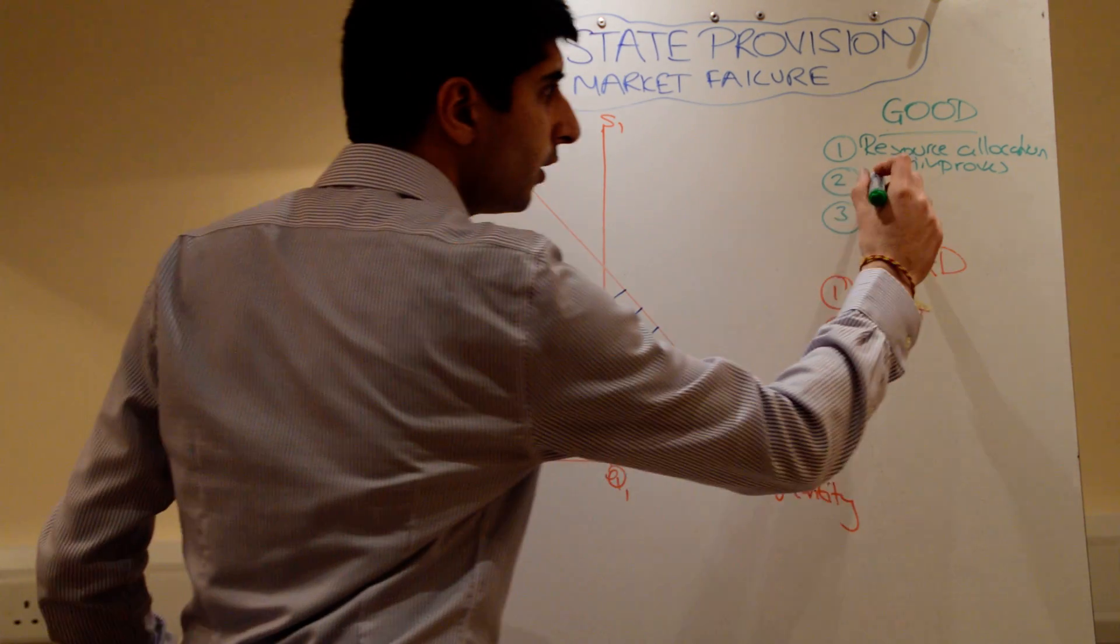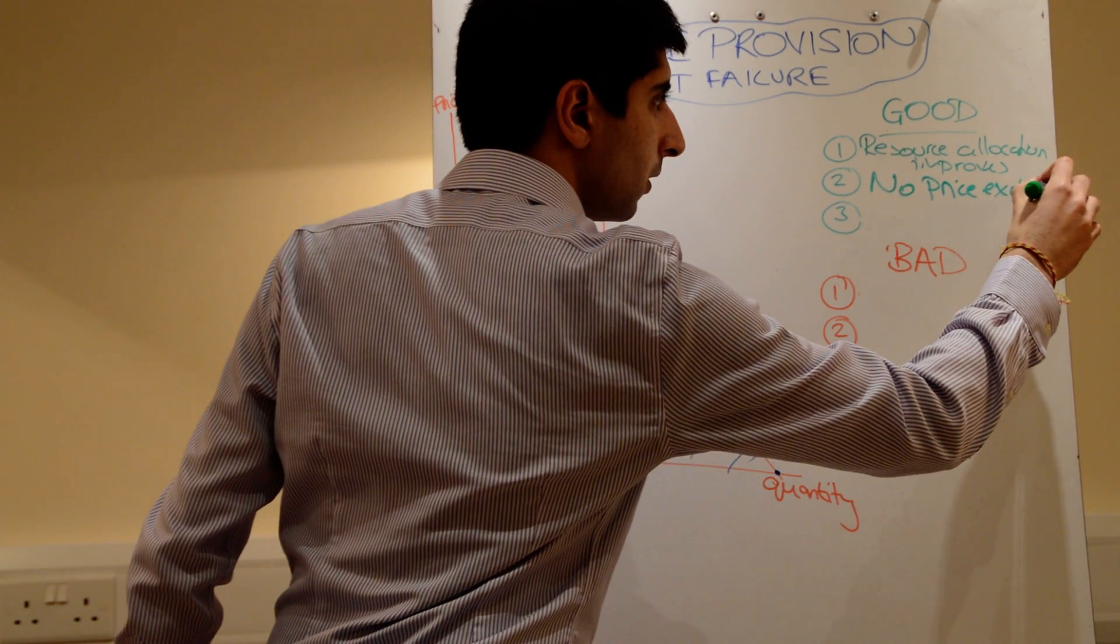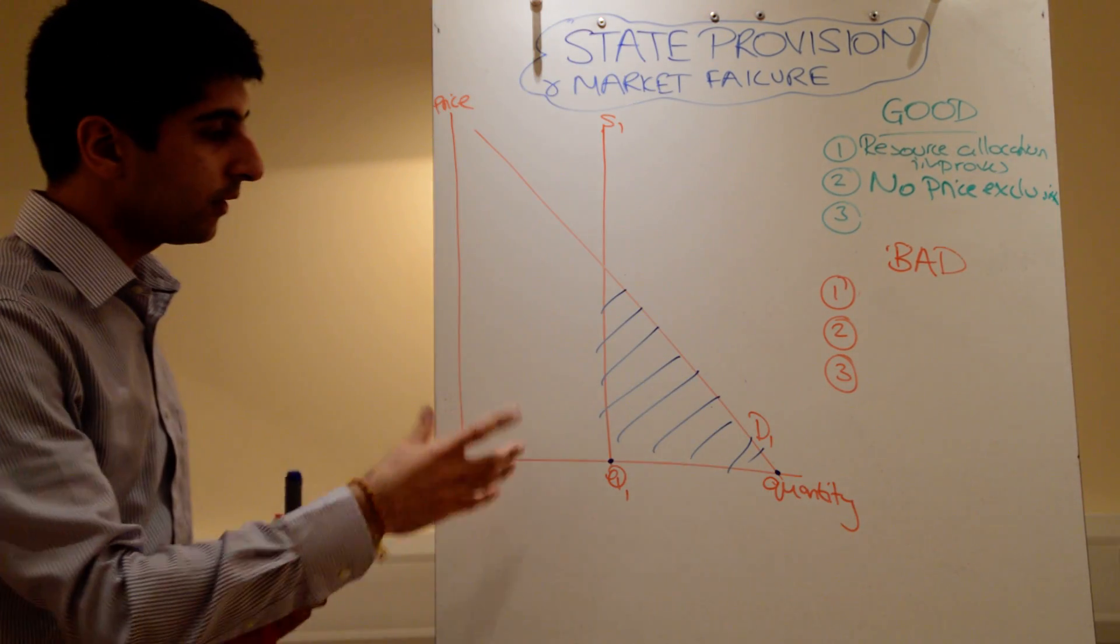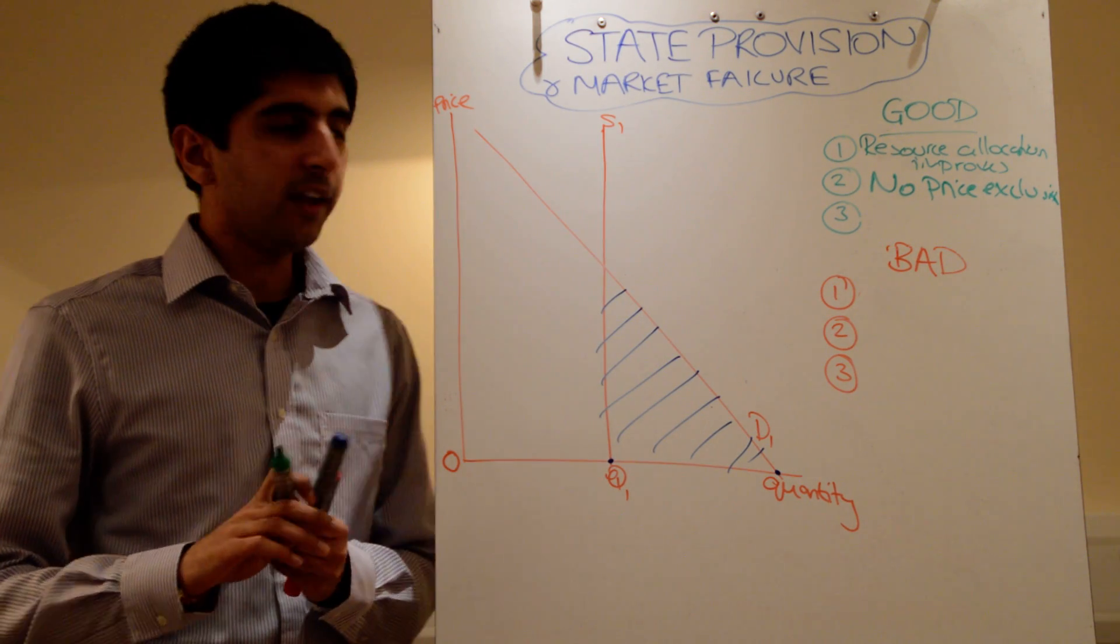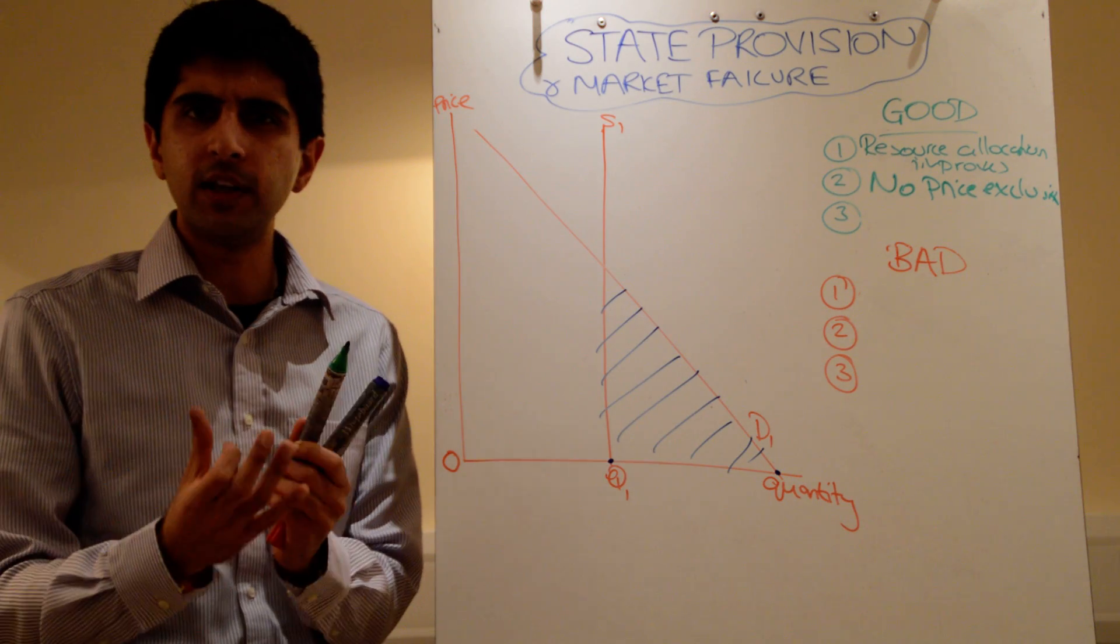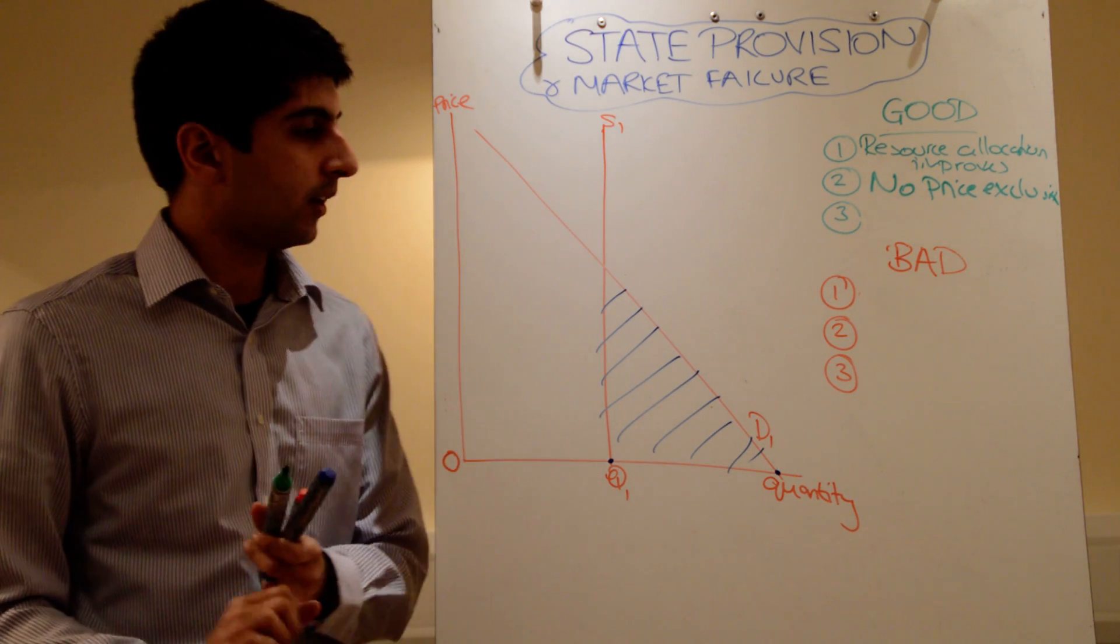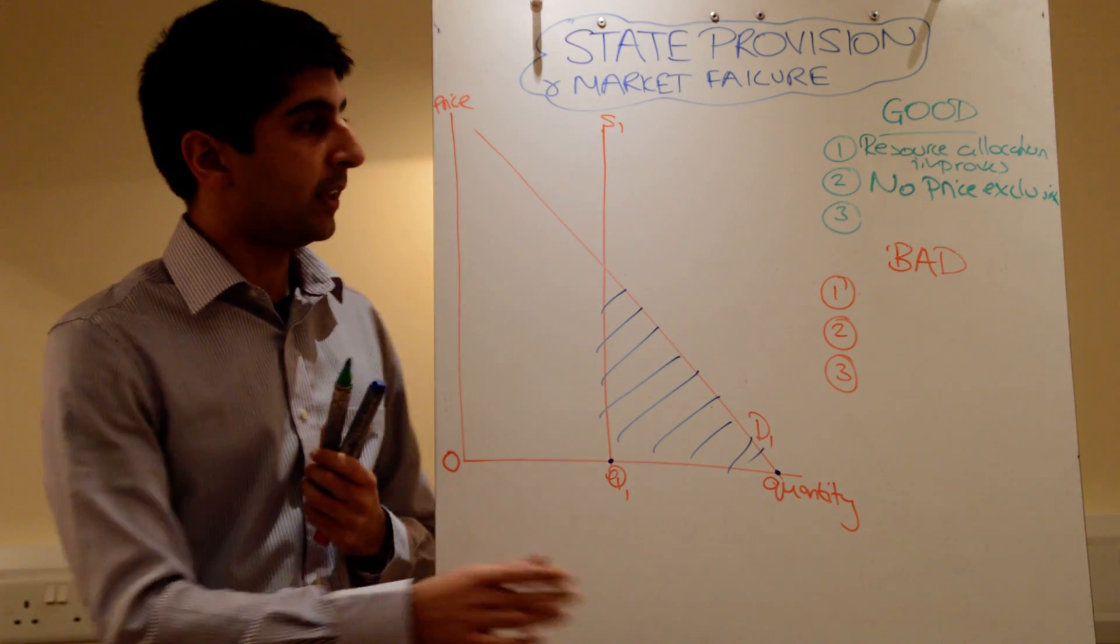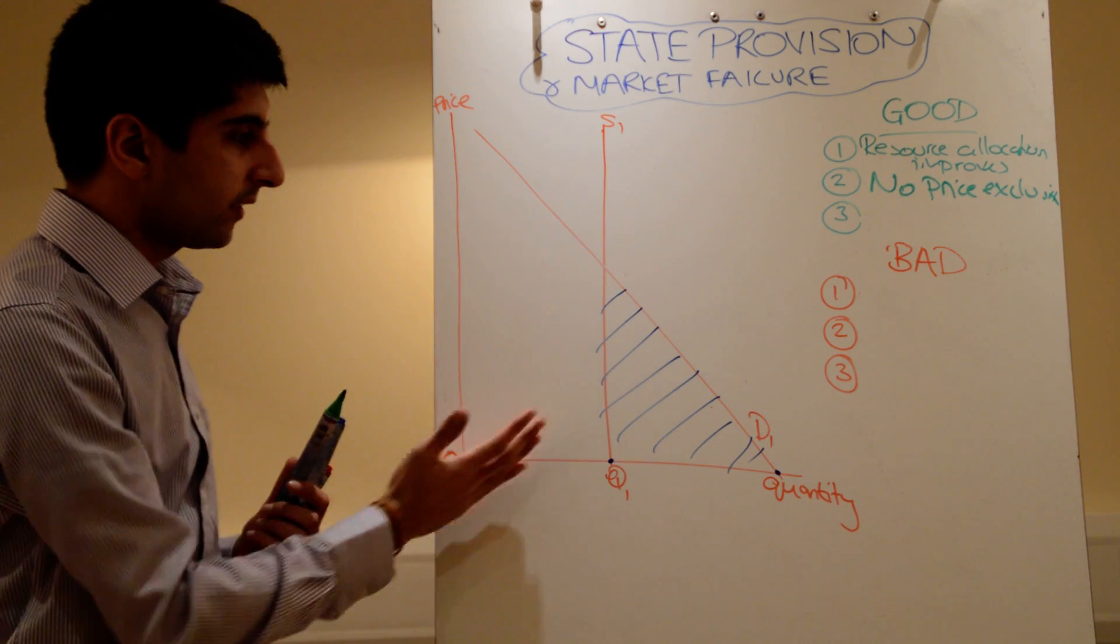Why else is it good? There is no price exclusion here at all. So these goods and services are free at the point of consumption. If they're socially desirable, if they're necessary for the function of society and necessary for all individuals, like good education is, like good healthcare is, well then providing it free means no one can be excluded from consuming them, which is a good thing.